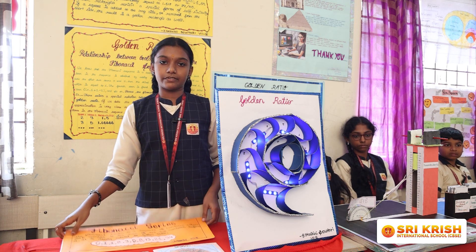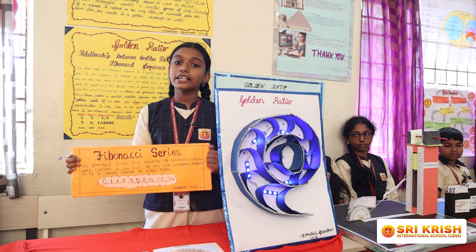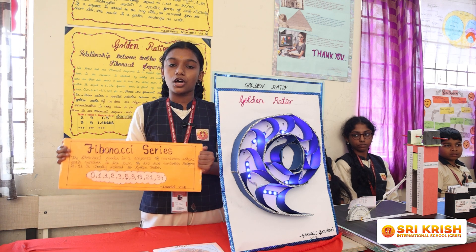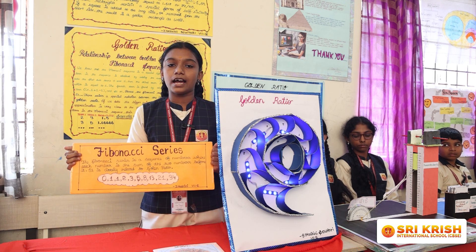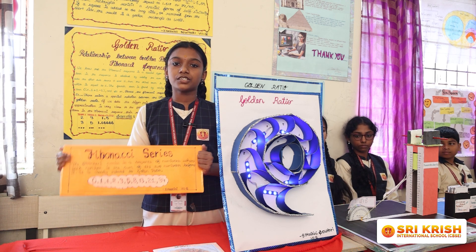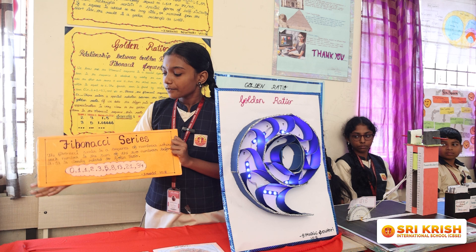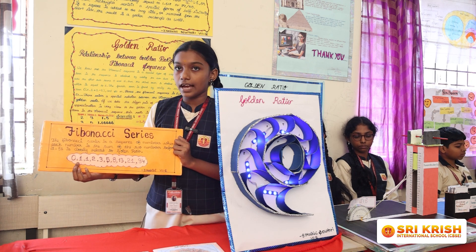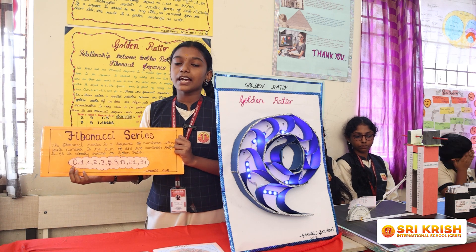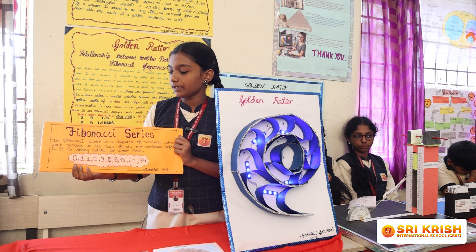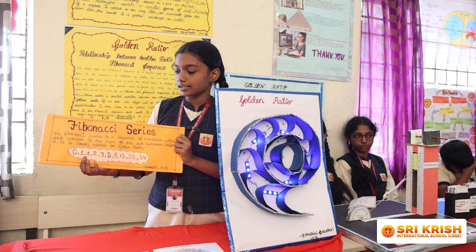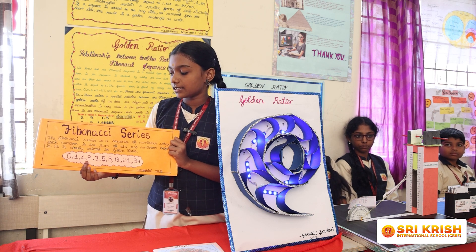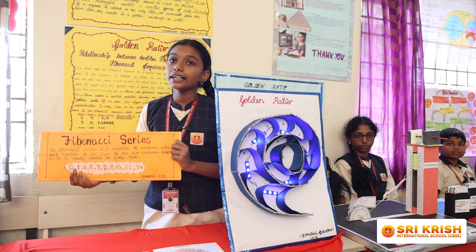Let's see the Fibonacci sequence and its relationship with the golden ratio. The Fibonacci sequence is a series of numbers where each number is obtained by adding the previous two numbers. Let's see how it works: first take two terms, zero and one. When we add zero and one we get one; when we add one plus one we get two, and it goes on.